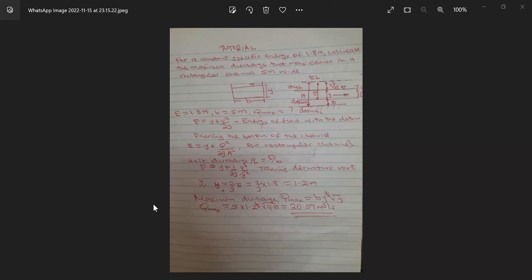Hello, welcome to another tutorial. Our tutorial involves computing maximum discharge using specific energy. So our question reads: for a constant specific energy of 1.8 meter, calculate the maximum discharge that may occur in a rectangular channel 5 meter wide.